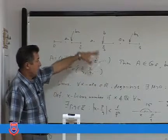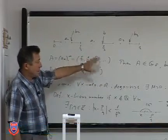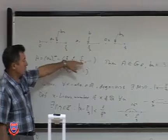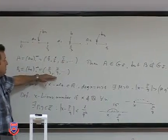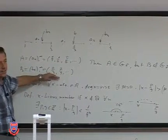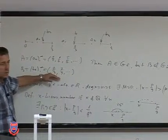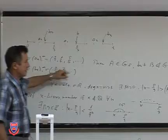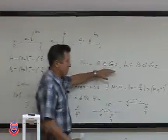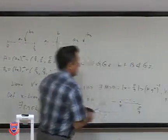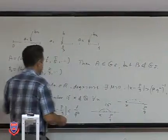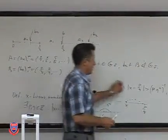First of all, what we want to prove is that these two sequences are rather different, in the sense that the first sequence A is G-delta, and the second sequence B is not G-delta.